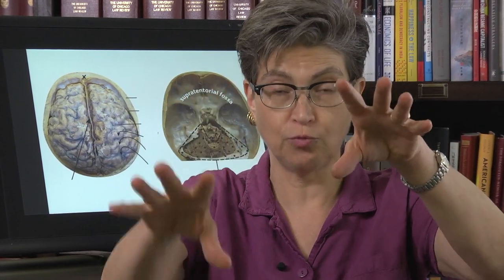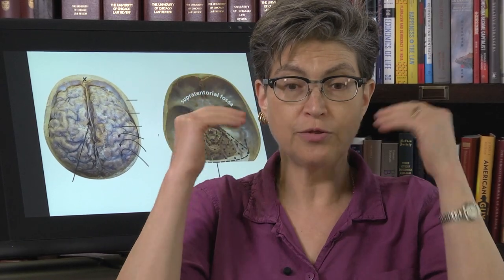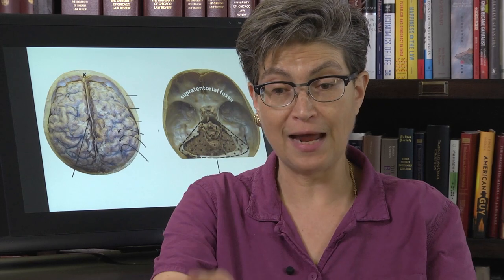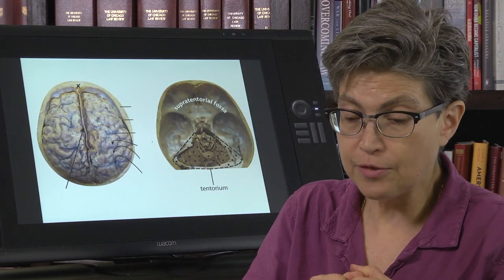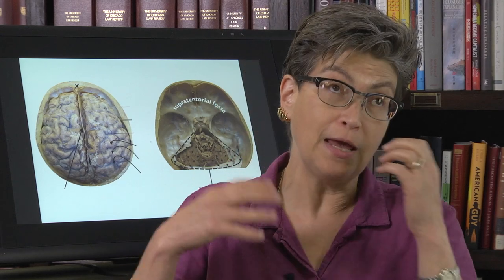There's supertentorial—above the tentorium—and that is further divided by the falx cerebri into a left and a right hemisphere.